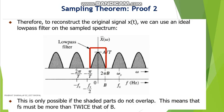This again is proof of the sampling theorem. To reconstruct the signal x(t), we can use an ideal low pass filter on the sampled spectrum. Here you can see that the sampling frequency ω_s (also known as fs) is greater than twice of B. This is only possible if the shaded parts of the spectrum do not overlap, meaning fs must be more than twice B.